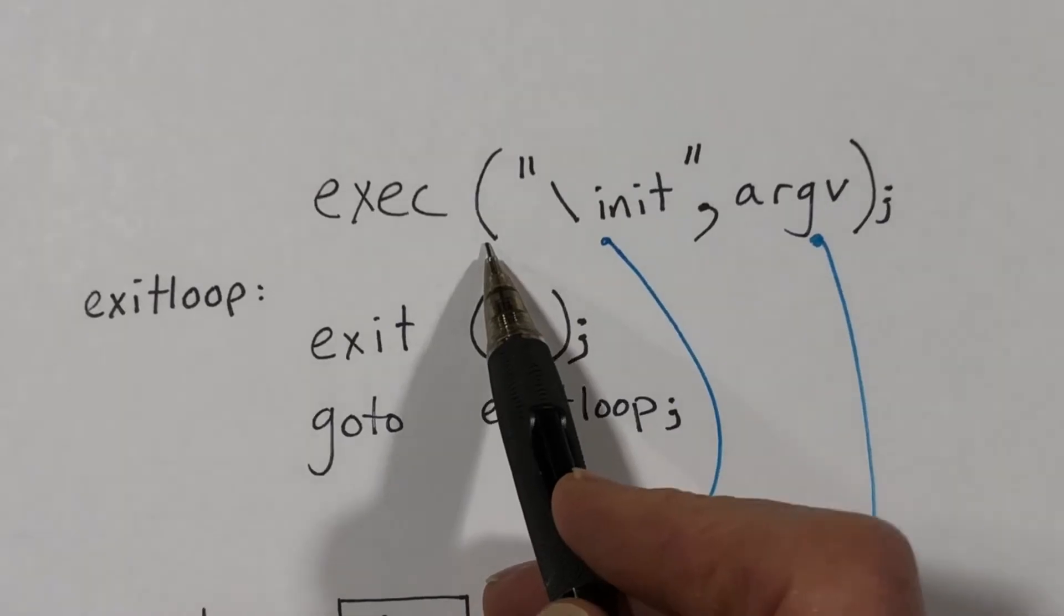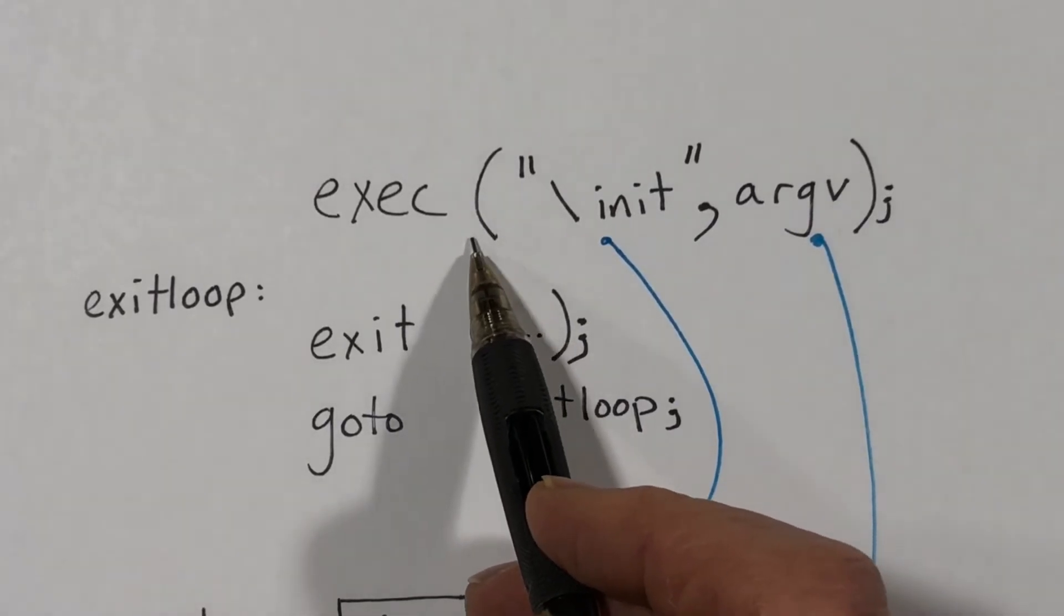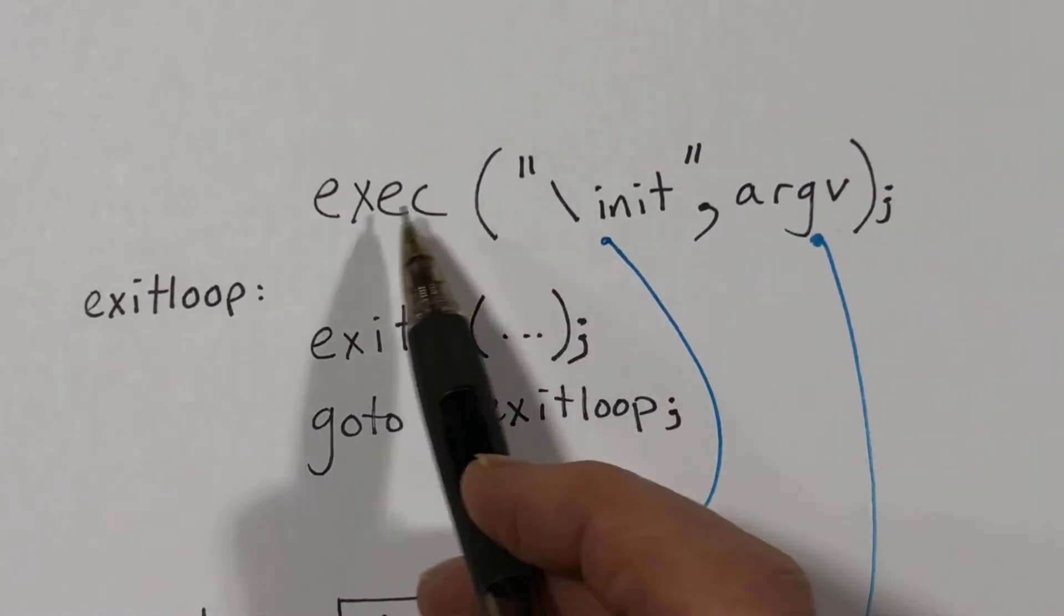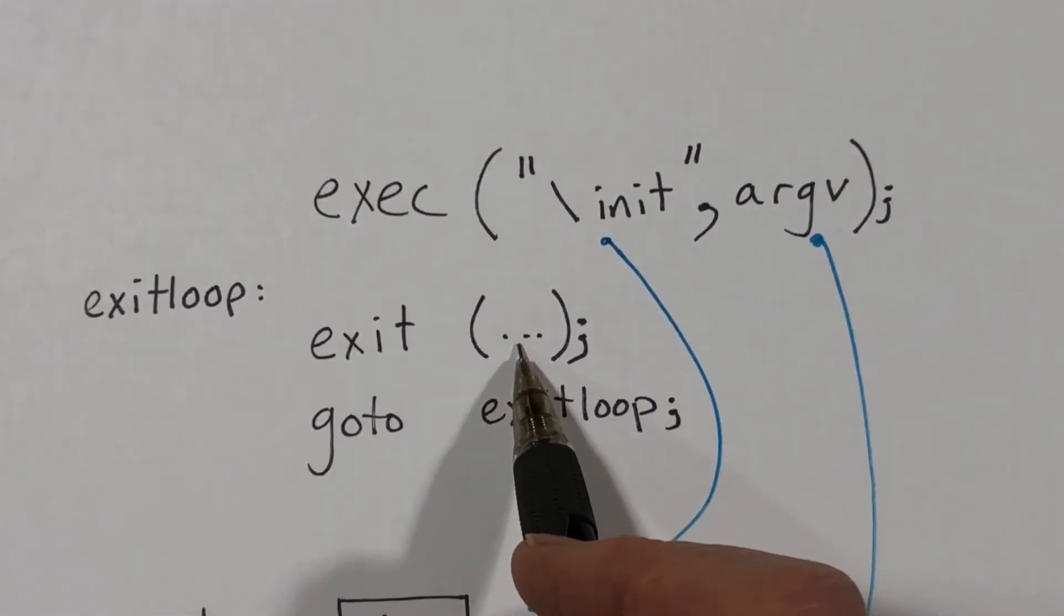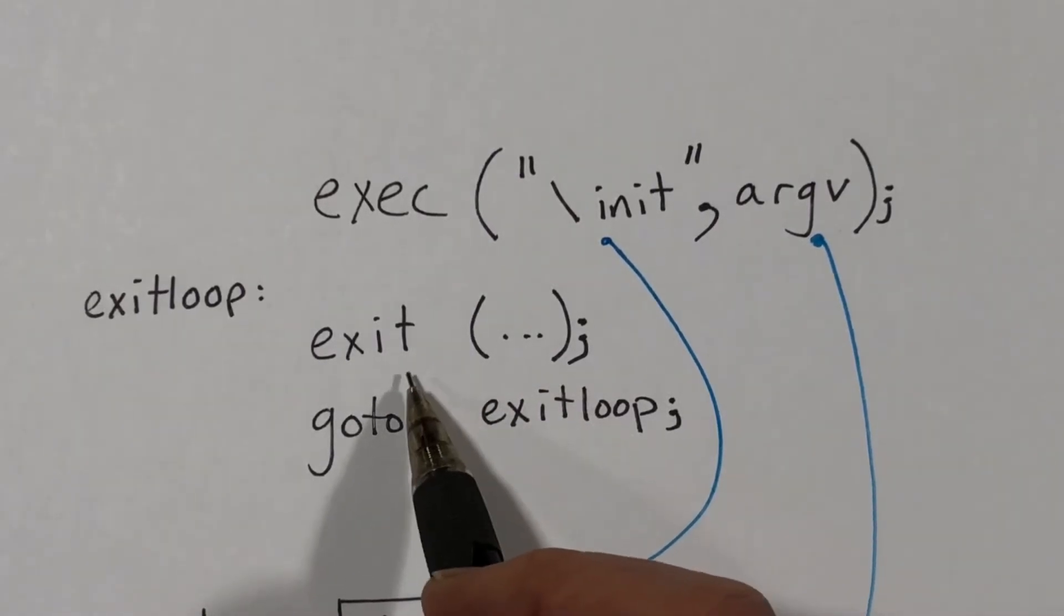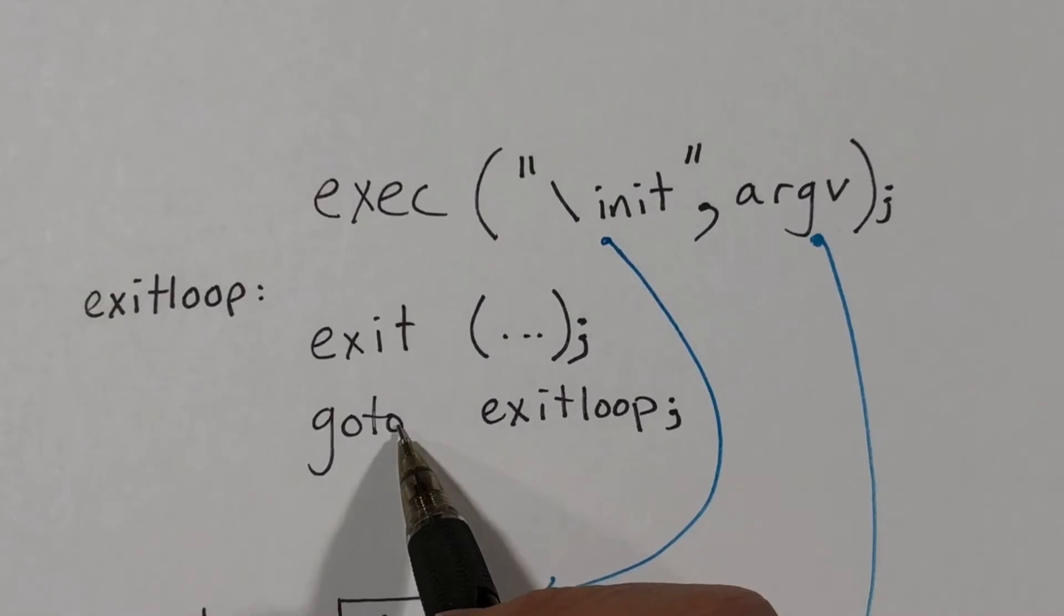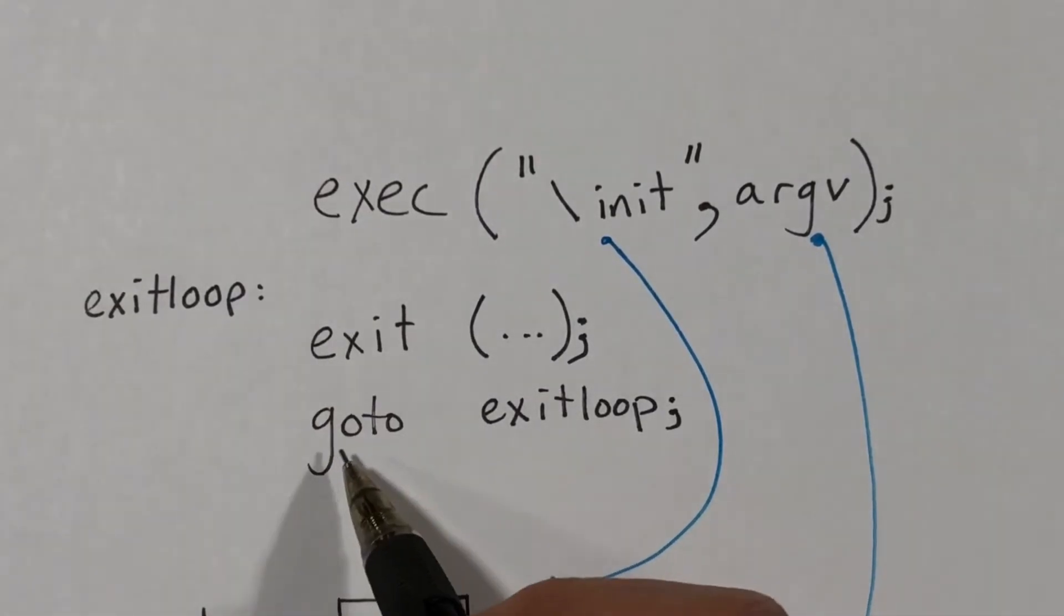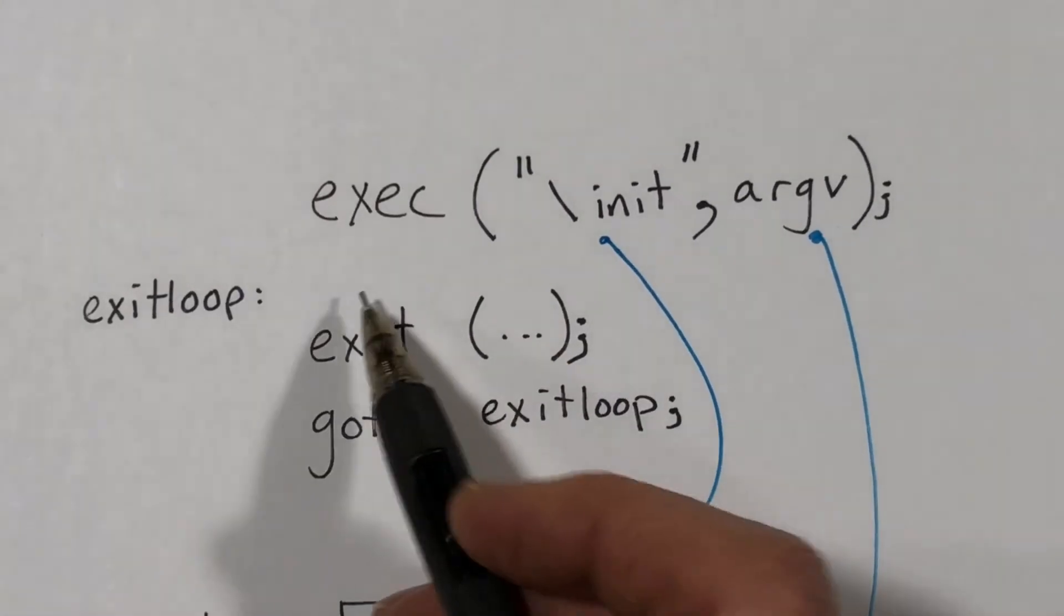If exec returns, which normally it would not, but if for some reason this file doesn't exist, then it would return. And what do we do then? Well, we invoke exit. And then if exit should return, which it definitely will not do, this program contains a go-to statement, which will call it again. So we don't expect that to happen.